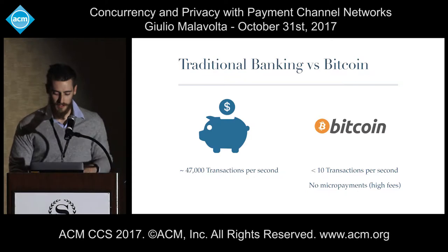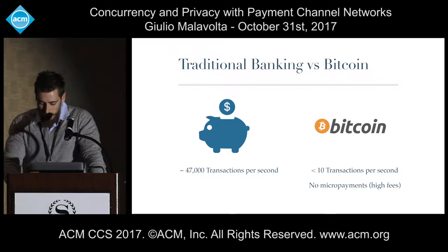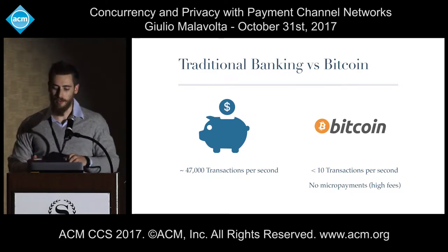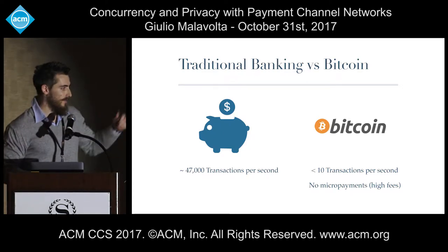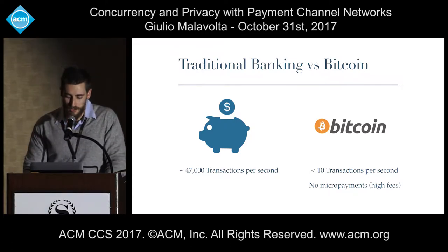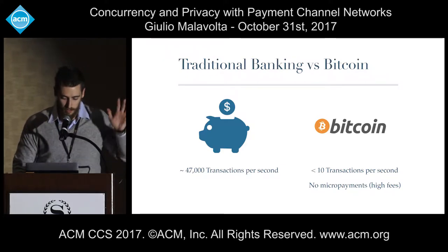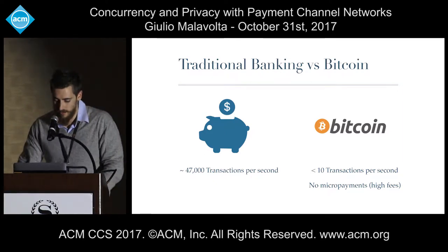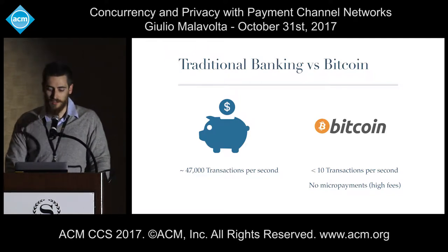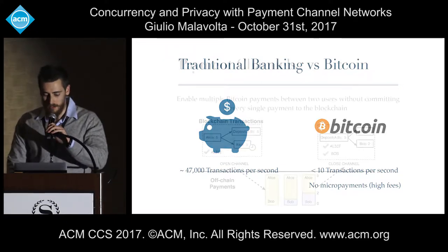By now we should all be convinced that cryptocurrency is something worth looking into. But it still has some limitations with respect to the traditional banking credit card approach. For example, a network like Visa can process up to 47,000 transactions per second, whereas the Bitcoin network today has a throughput of less than 10 transactions per second. Also, micropayments do not really work in Bitcoin due to high transaction fees, which undermines the scalability of the Bitcoin network.